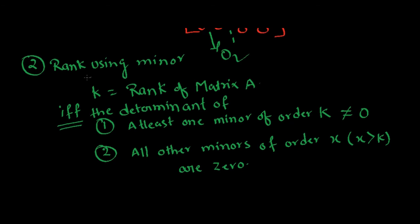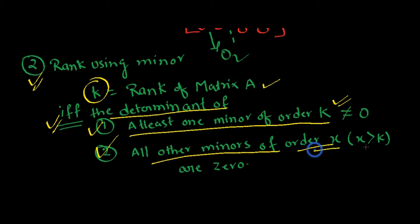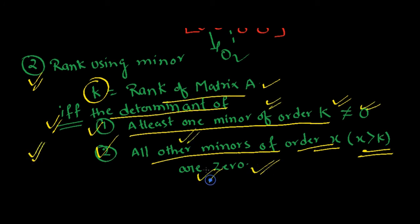The second method is by using minors. It states that K is the rank of matrix A if and only if two conditions are satisfied: the determinant of at least one minor of order K is non-zero, and the determinants of all minors of order greater than K are zero.